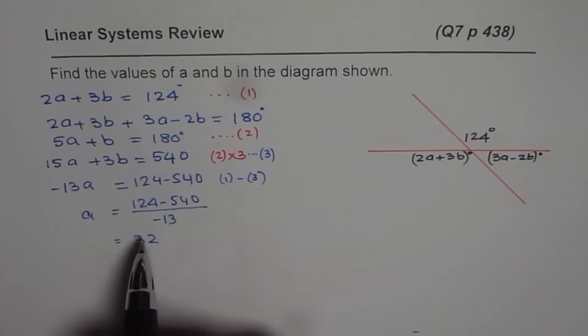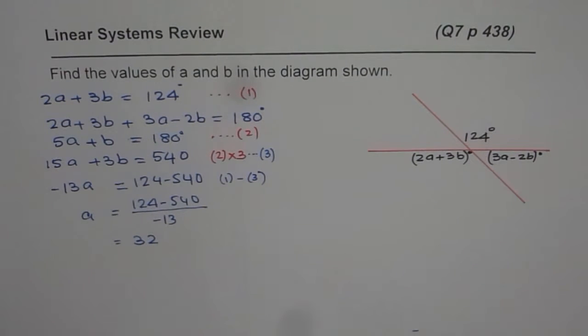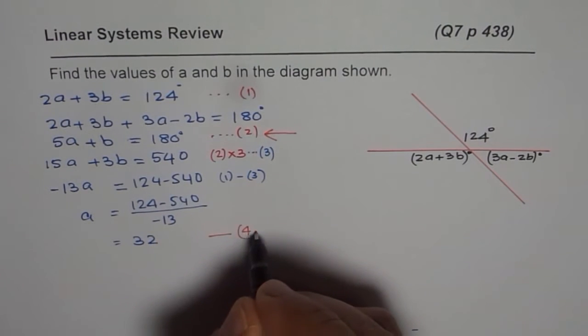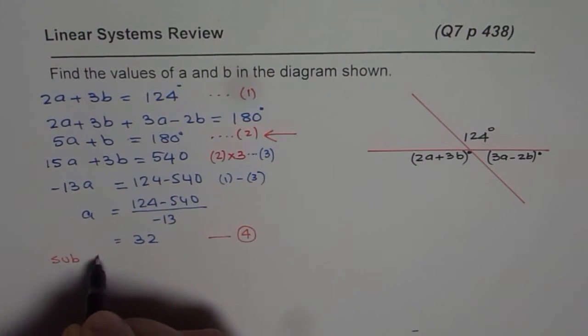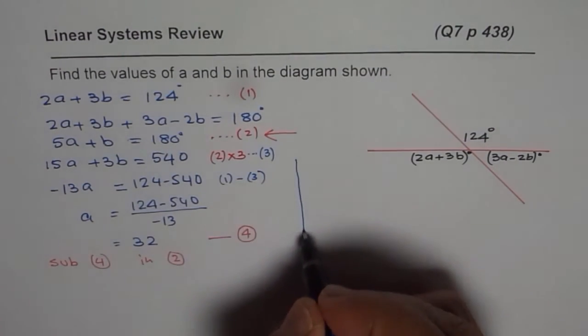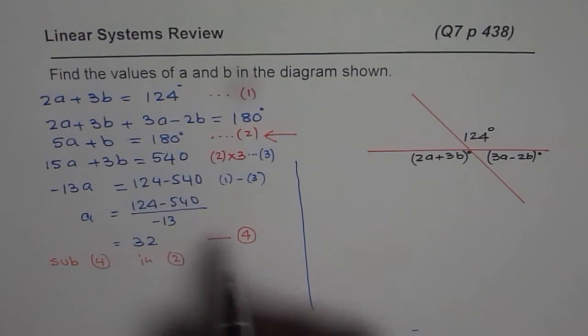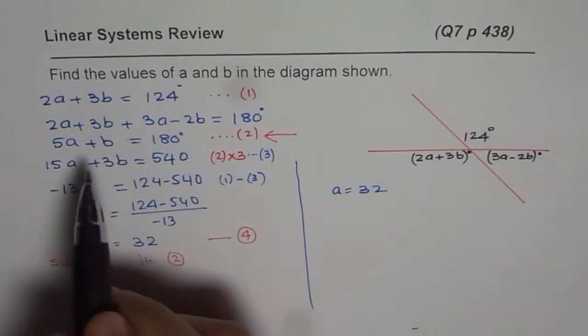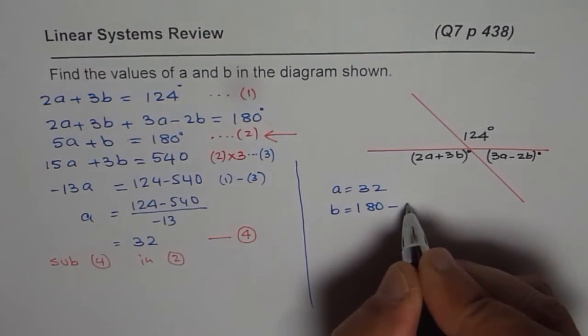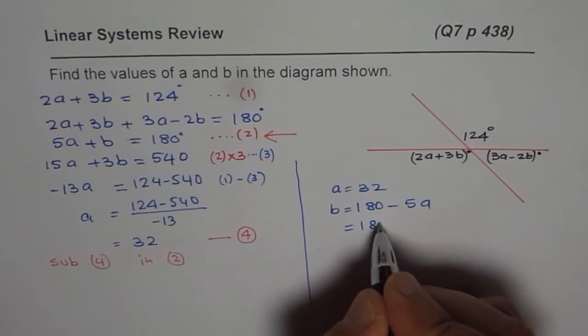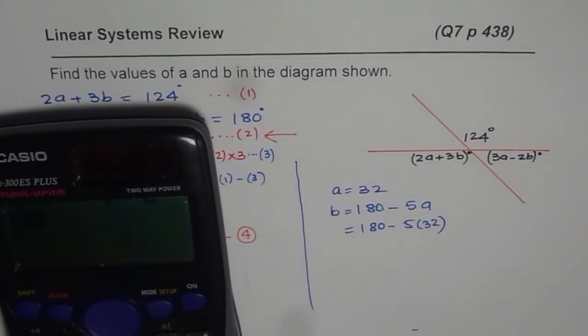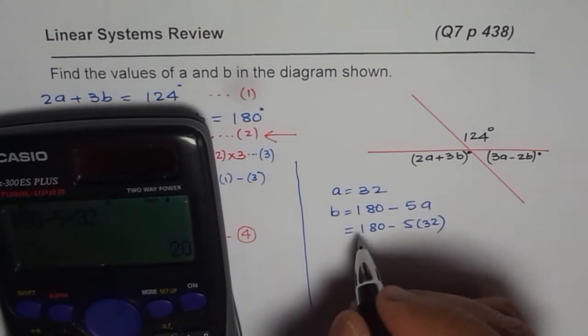Once you get the value of A, you can always find B. Let me use equation number 2. We will use this equation to find B. So let us call this as equation 4 for us. So now we will substitute 4, which is A equals to 32 in equation 2. So that is the next step. So we have A equals to 32. And equation 2, I can write this as B equals to 180 minus 5A. So we will substitute A as 32 here. So we have 180 minus 5 times 32, which equals to 20 degrees.